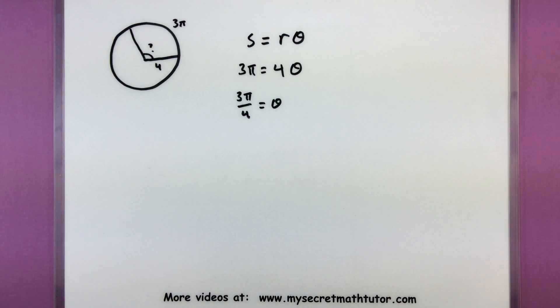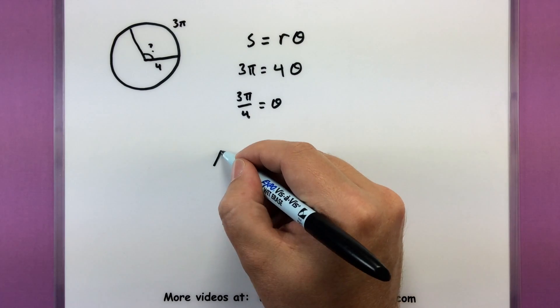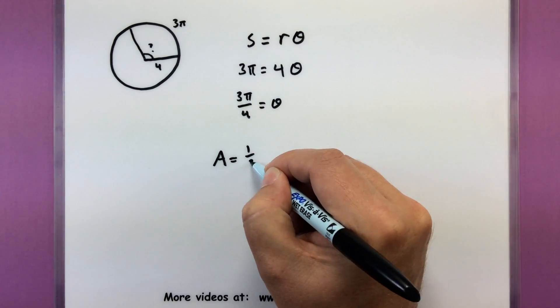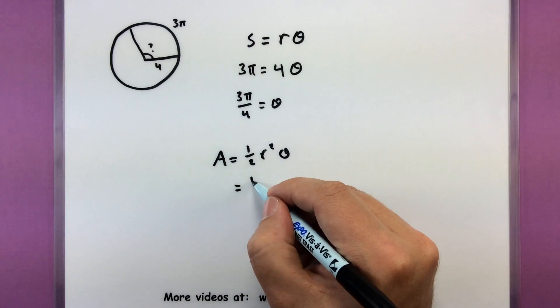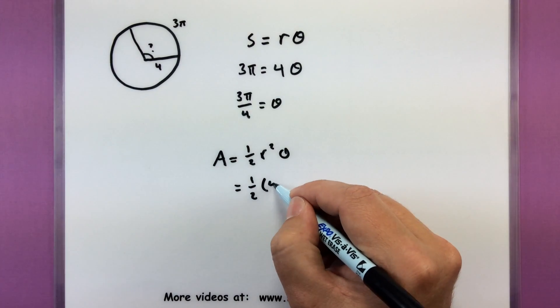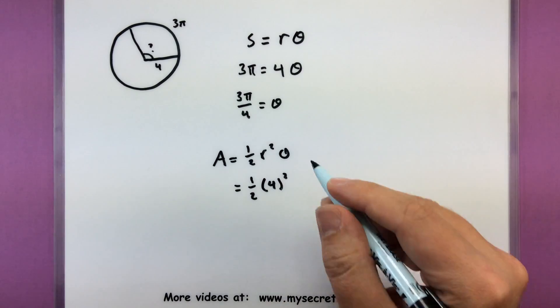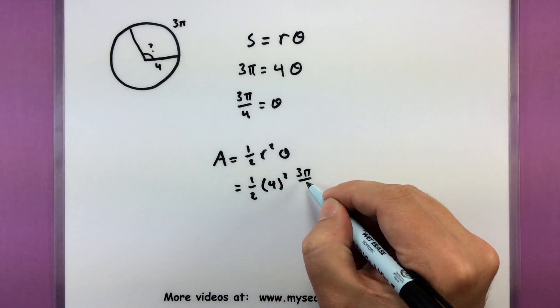And now we can move forward with this and actually figure out the area. So area equals one half radius squared times angle, where my radius is still the 4, so 4 squared. But now I know my angle, it's 3π over 4.